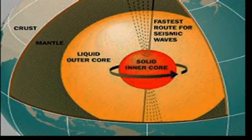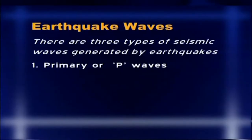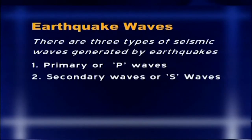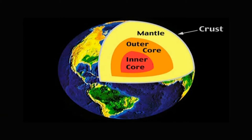The second type of waves generated during earthquakes are known as secondary or S waves. They also have short wavelength and high frequency. These are transverse waves that pass through all the solid parts of the earth but cannot pass through the liquid part of the core of the earth.